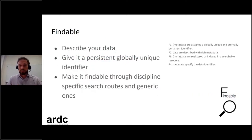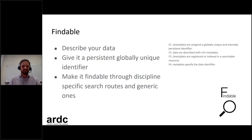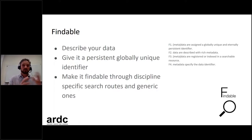The FAIR data principles — four letters: Findable, Accessible, Interoperable, Reusable — have quite a bit of detail behind those four letters. Findable means researchers should describe their data well and ensure it has a persistent globally unique identifier, so that data does not get lost — even if the data moves, a researcher wanting to reuse it can still find it. It should also be findable through discipline-specific and generic search routes.